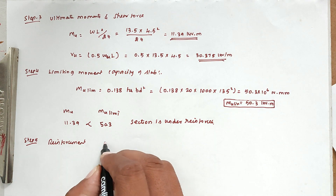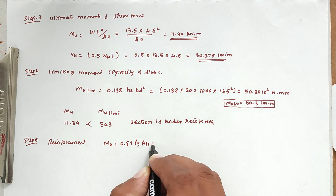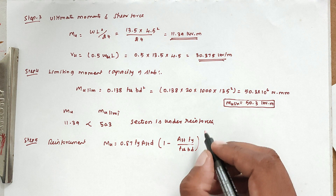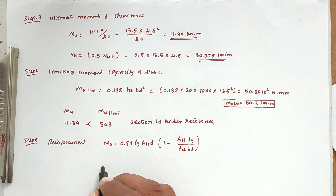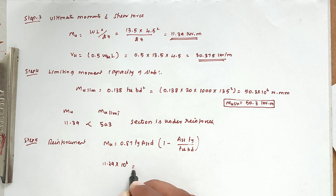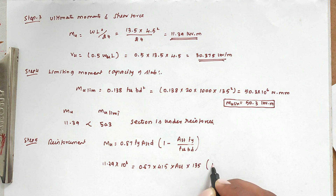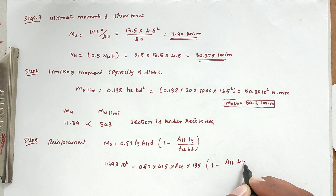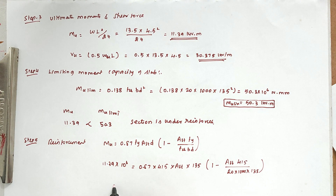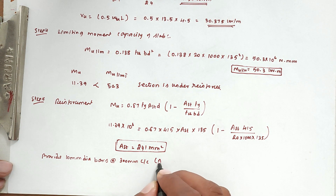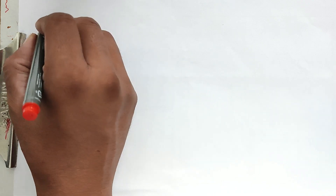Step 5: Reinforcement details. Using Mu = 0.87 × fy × Ast × d × [1 − (Ast × fy)/(fck × b × d)]. Substituting: 11.39 × 10⁶ = 0.87 × 415 × Ast × 135 × [1 − (Ast × 415)/(20 × 1000 × 135)]. Solving, Ast = 241 mm². Provide 10 mm dia bars at 300 mm c/c; corrected Ast = 262 mm².